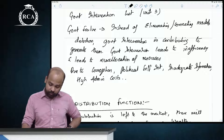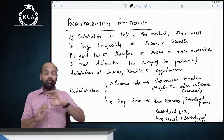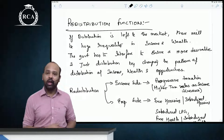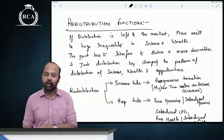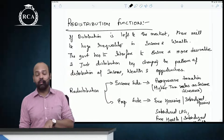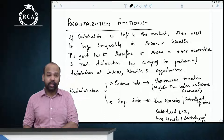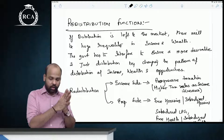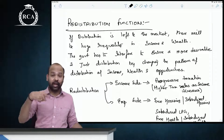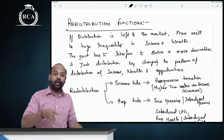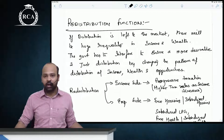After the allocation function, we spoke about the redistribution function. If distribution is left to the market, there will be a huge amount of inequality in income and wealth. This is why distribution cannot be left to the market — the government has to interfere to ensure just and equitable distribution. High inequality leads to lower income levels and lower demand for certain products, meaning the economy will not automatically operate at an equilibrium level.